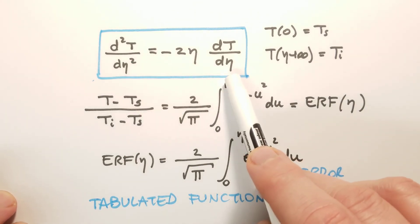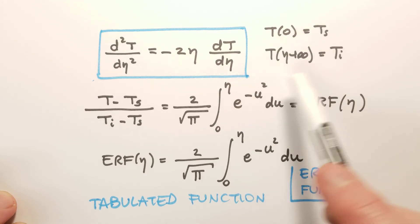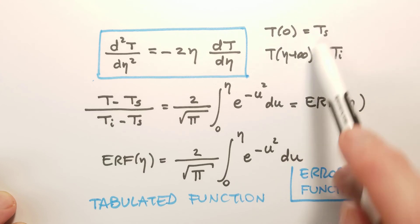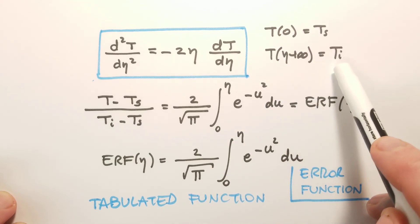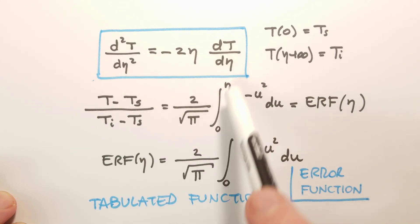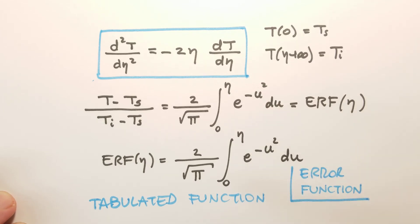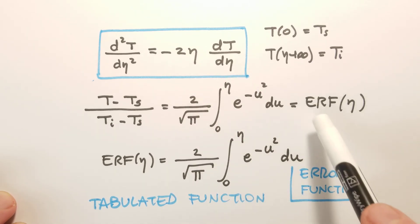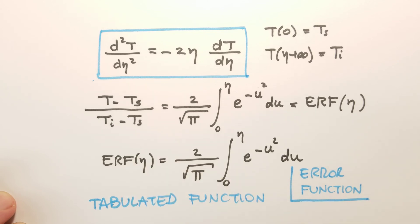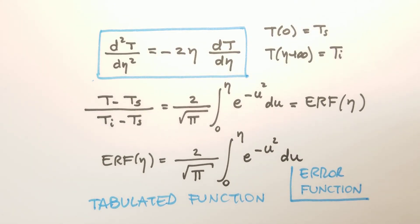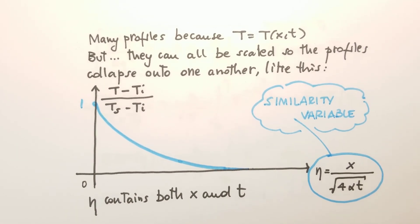We can integrate this ODE and get an integral of the form e to the minus u squared du. There is no known closed-form solution to this integral, but it is a well-known special function called the error function. This is a tabulated function — you can find it on the internet or in Cengel's textbook. If you plot the error function, you recover the temperature profile as a function of eta that we discussed earlier.